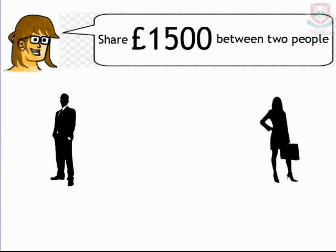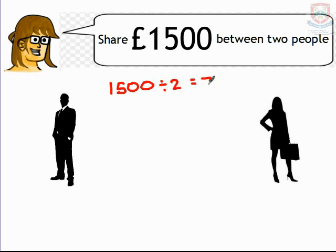Now when asked to share, usually we look at division. So if we were asked to share £1,500 between two people, we would divide the amount by 2. So if each person was to receive an equal share of this money, they would both get £750.